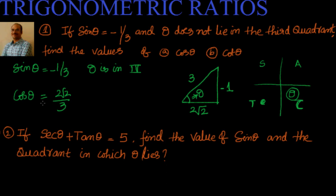In the fourth quadrant, cosine is positive, so cos theta equals 2 root 2 by 3. For cot theta, we get minus 2 root 2. The key reasoning: sine is negative in Q3 and Q4, theta is not in Q3 so it's in Q4, where cos is positive. We drew a right angle triangle and used it to find cot theta.